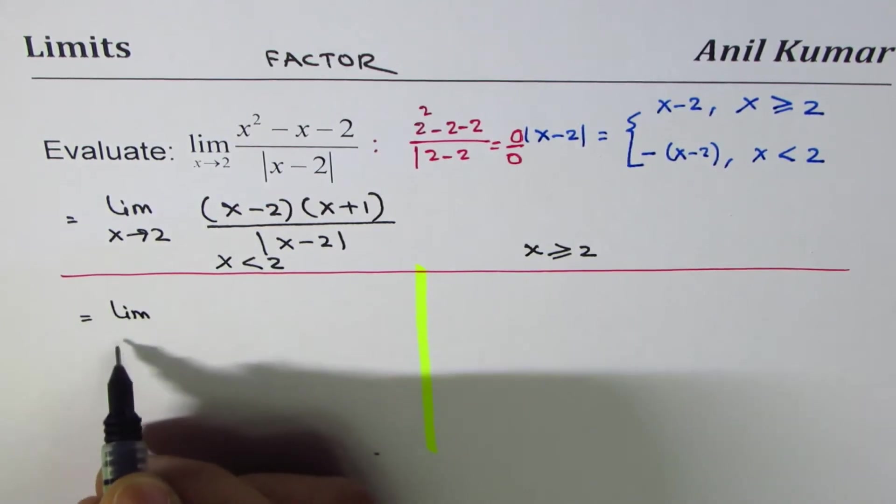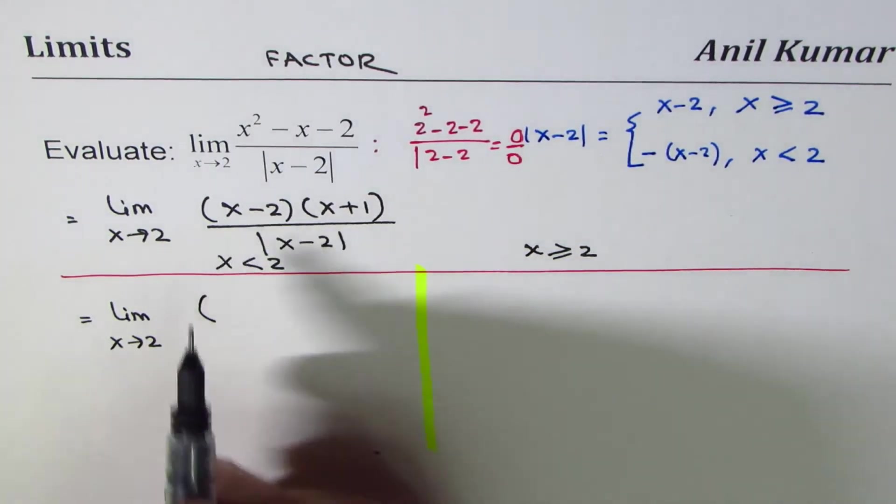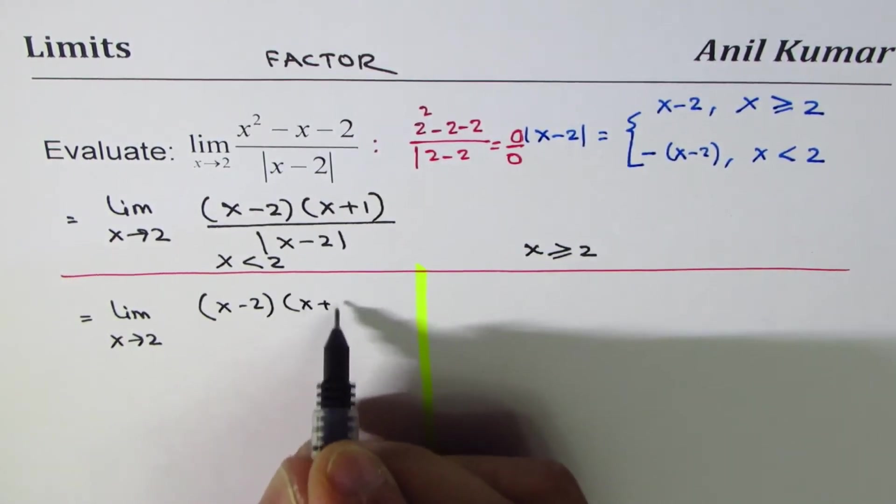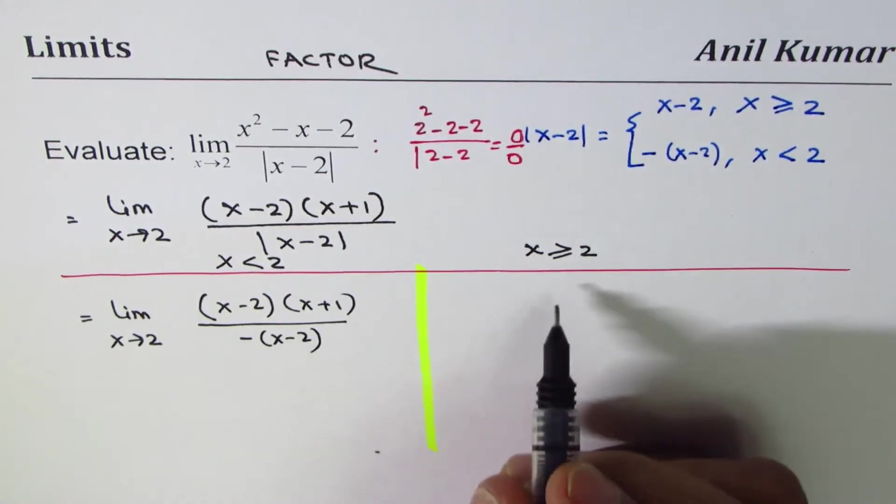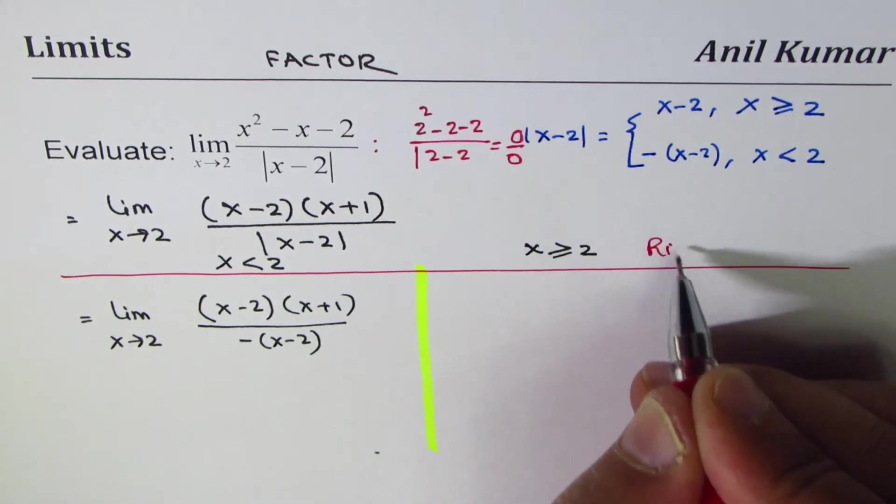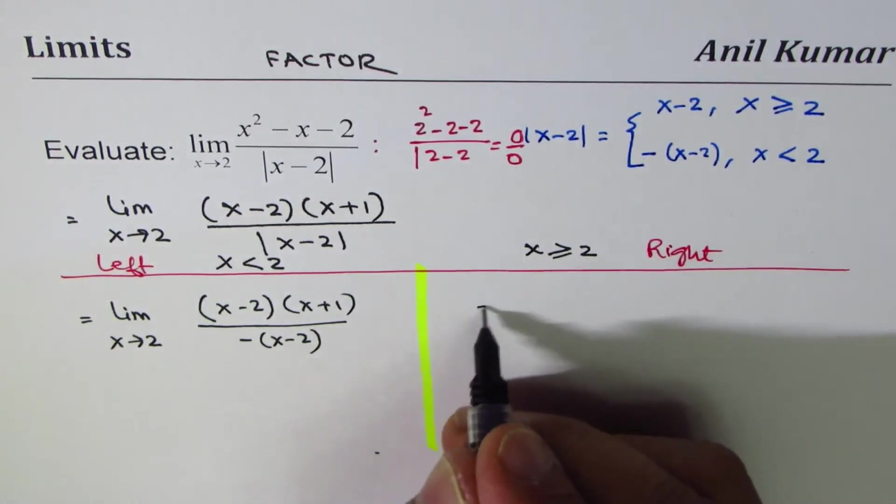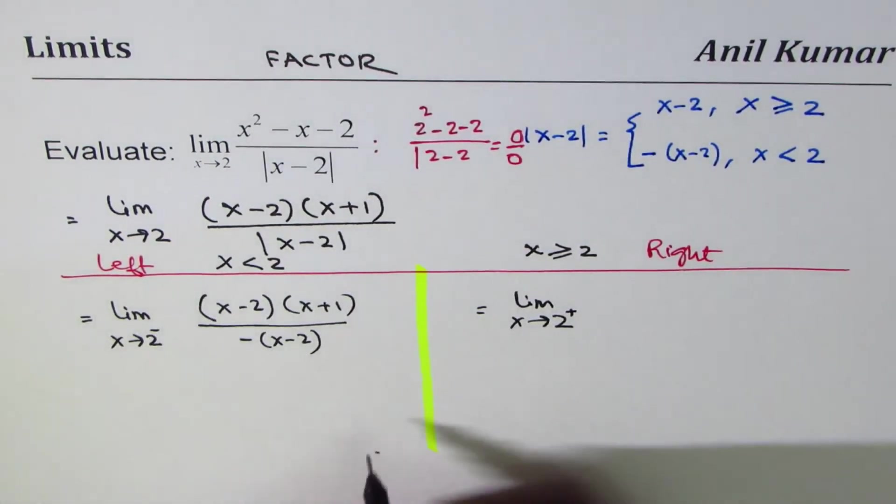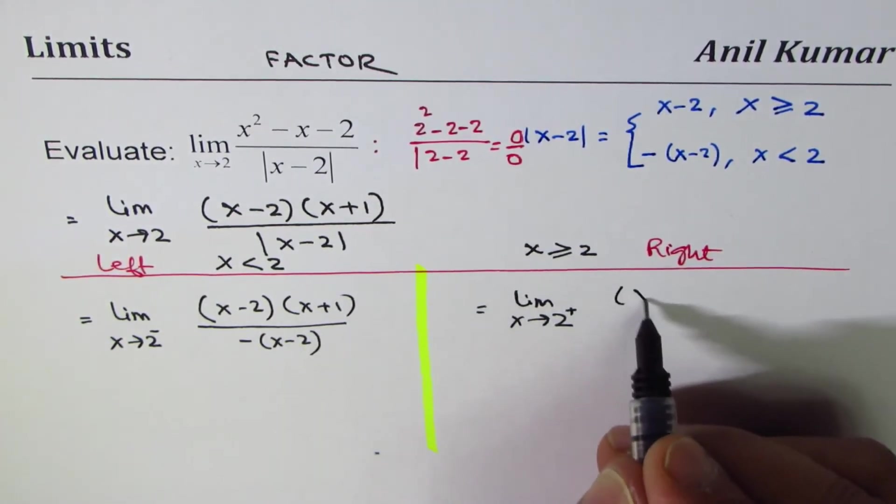The question changes to limit x approaches 2. When we are approaching from the left side, we have x minus 2 times x plus 1 in the numerator and the denominator will be minus of x minus 2. When considering from the right side, the numerator is the same but the denominator will be x minus 2.